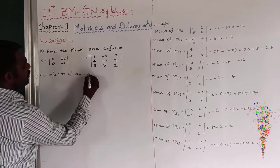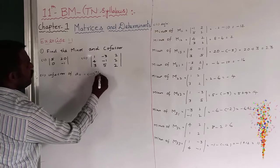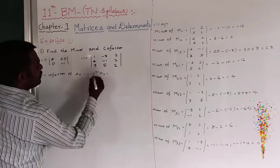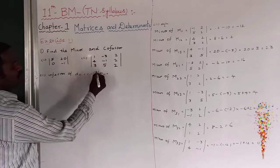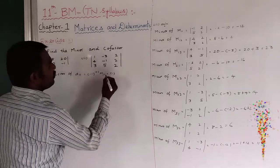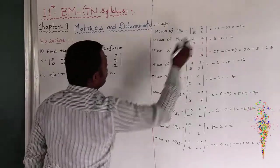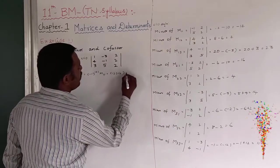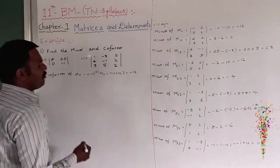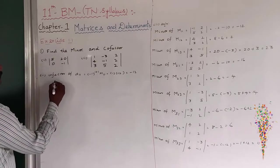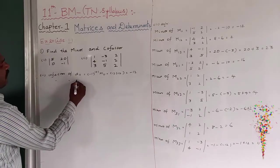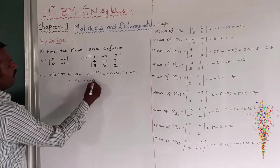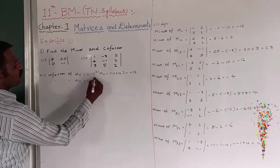A11 is minus 1 to the power 1 plus 1, times M11. So this is minus 1 to the power 2, which is going to be plus 1. What is M11? It is minus 12. So this is going to be minus 12.